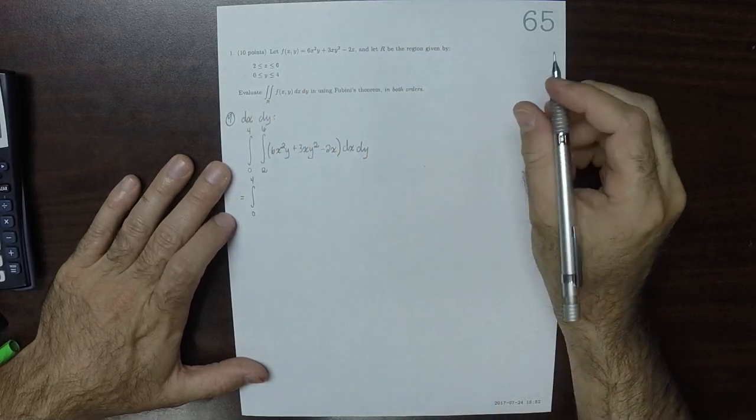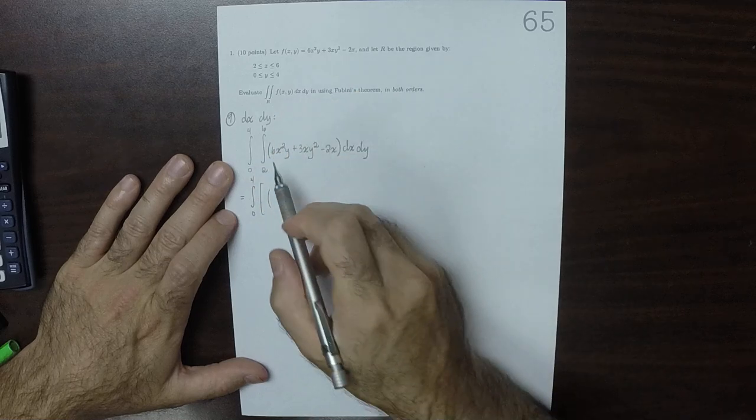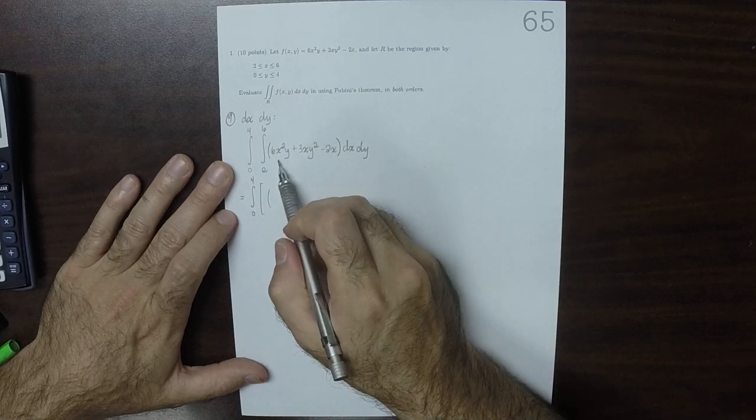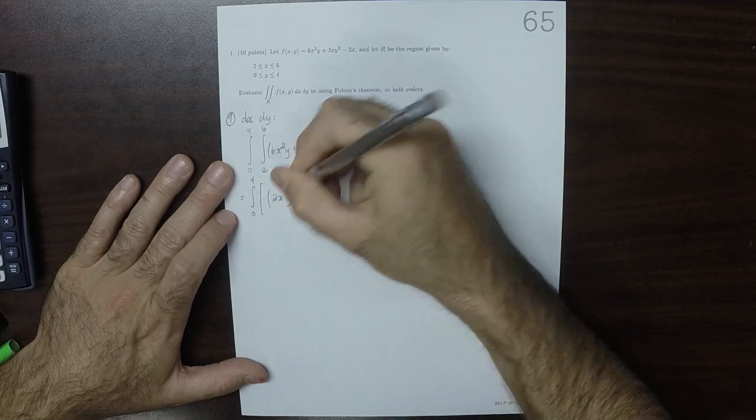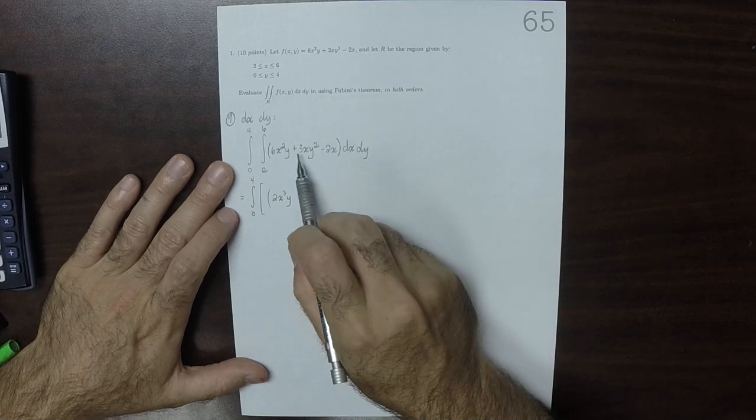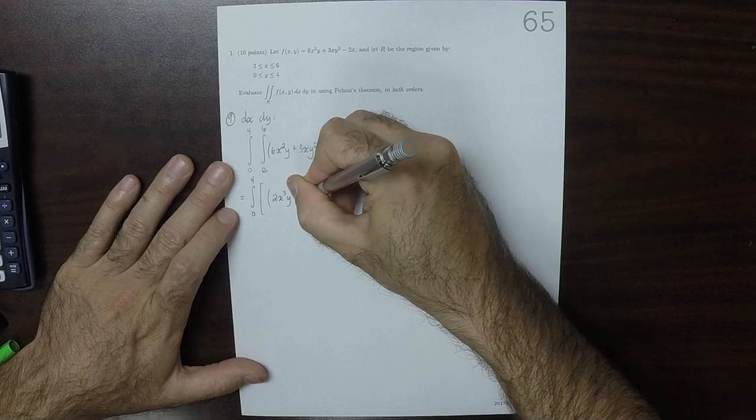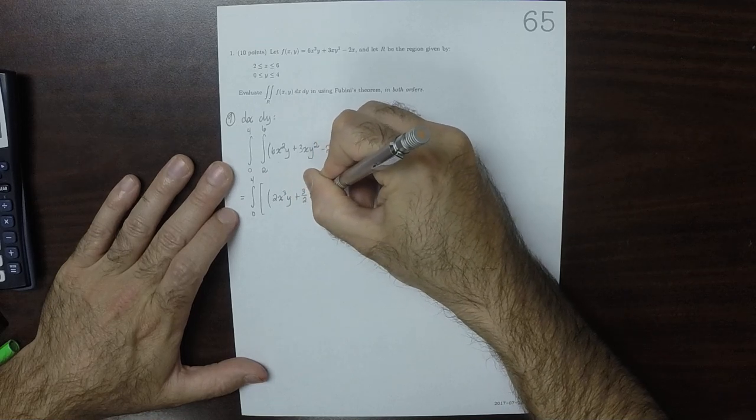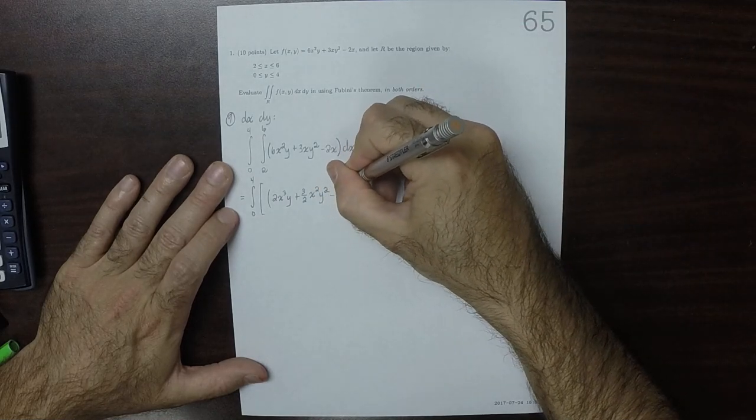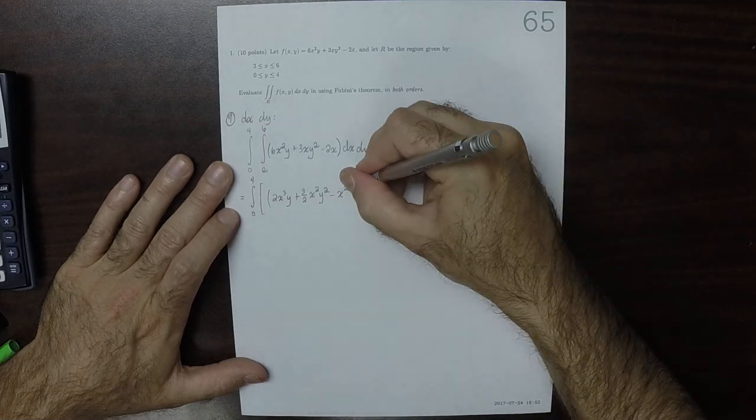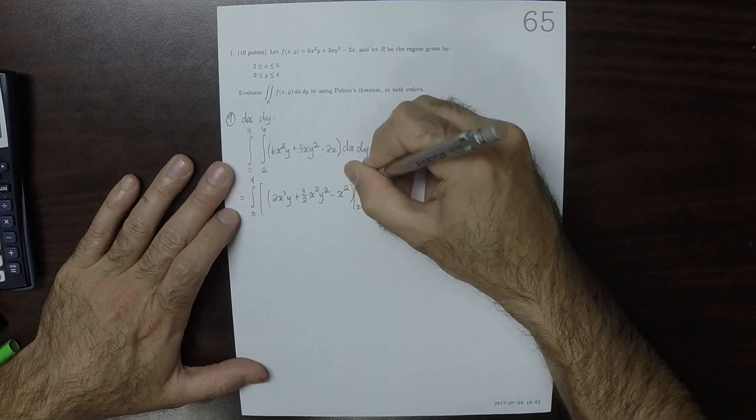Anti-differentiating with respect to x, that gives 2x cubed y. That goes to x cubed over 3, so 2x cubed y becomes x cubed y. Then anti-differentiating that would be 3 halves x squared y squared, and then minus x squared. This is evaluated from x is 2 to x is 6.